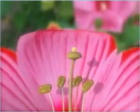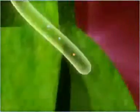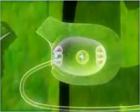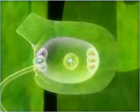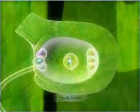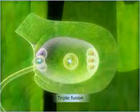It may be interesting to learn that fertilization in plants is known as double fertilization, as two fusions occur in the embryo sac instead of one. These fusions are called syngamy and triple fusion.